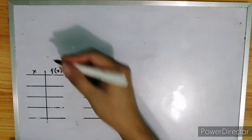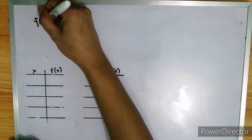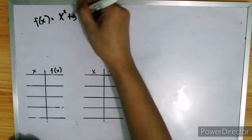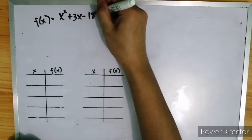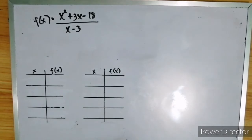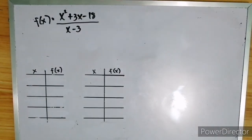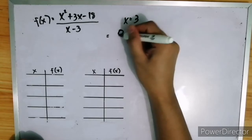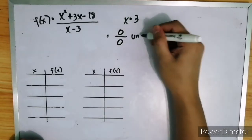Suppose we have the function f of x equals x squared plus 3x minus 18 over x minus 3. We know that this function is undefined at x equals 3, because if we're going to evaluate this function at x equal to 3, it will become 0 over 0. That is undefined.